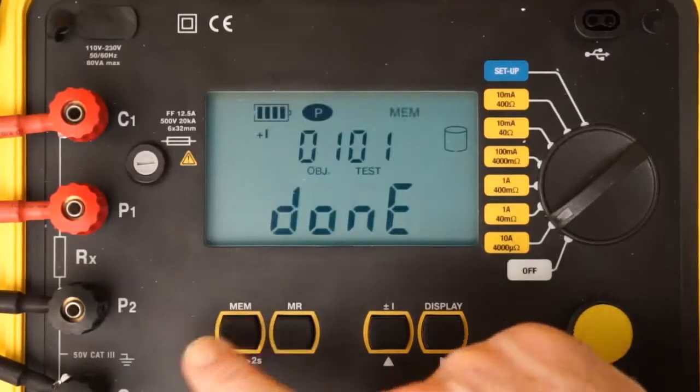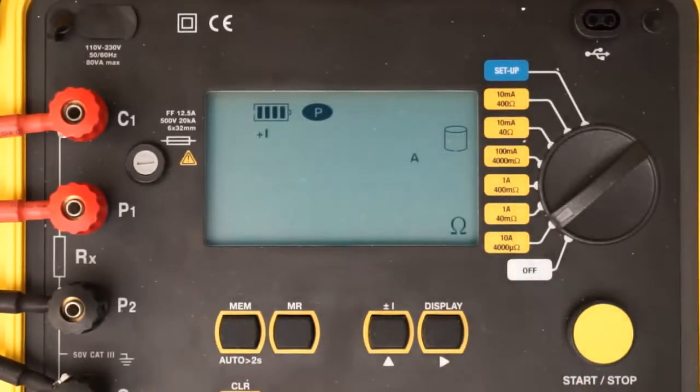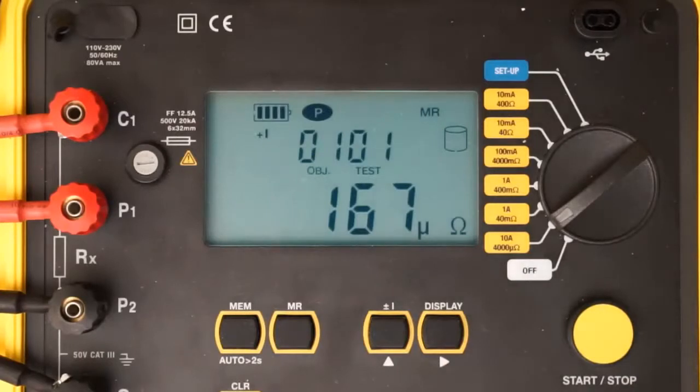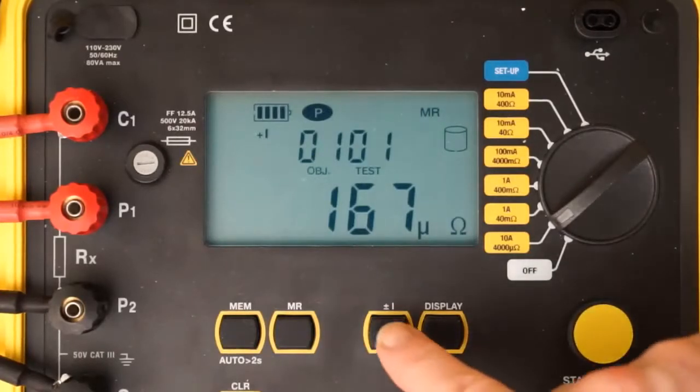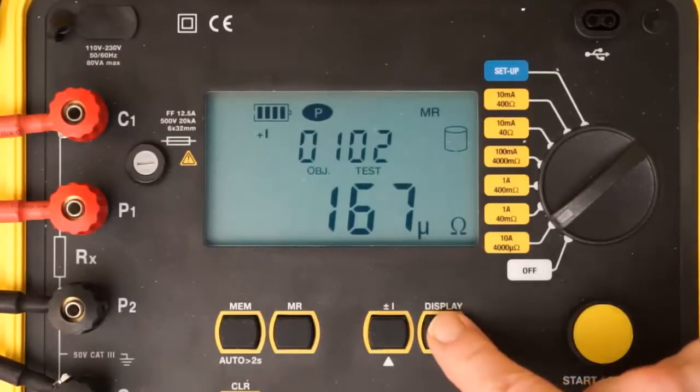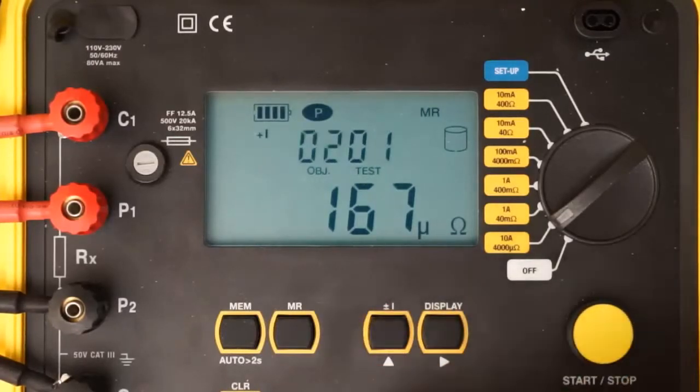Stored tests can be viewed in the Model 6240's LCD. To do this, press the memory recall button. This displays the last test viewed. Press the up button to display any other test in the object. To view tests stored in another object, press the right button and use the up button to select the object number.